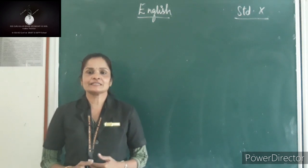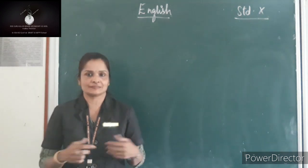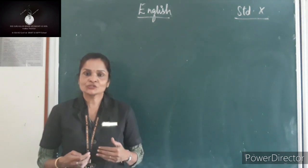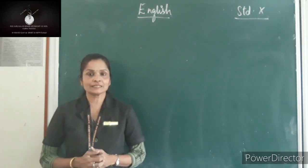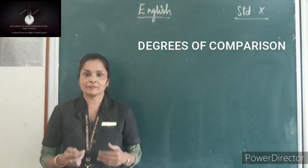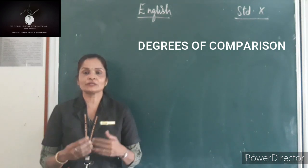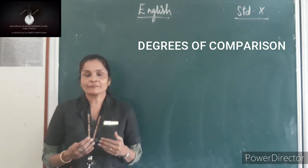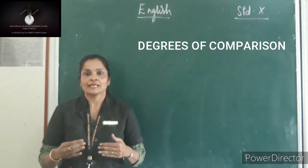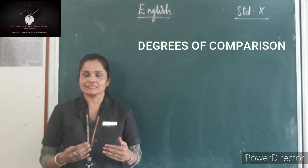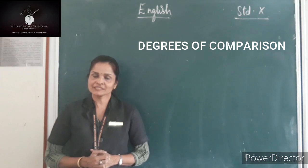So from this we understand that human nature is to make comparisons between things. Now today I am going to teach you this comparison, that is we say it in English grammar as degrees of comparison. There are different levels of comparison. If we see three beautiful things together, again we will have some favouritism towards one thing, so we have to say the comparison in different levels. Degrees of comparison will help you with that.